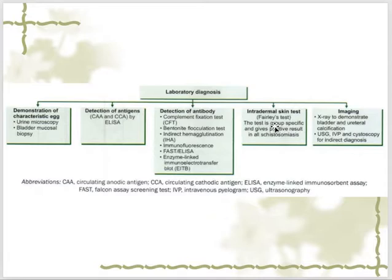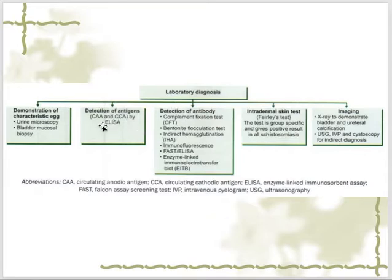Currently available tests include the circumoval precipitin test (COPT), the indirect hemagglutination test (IHA), and ELISA — all to detect antigens or antibodies. Nowadays, more of this ELISA testing is being done to detect active infection. Gut-associated antigens are circulating in the blood, like the circulating anodic antigen (CAA). CAA is particularly useful because it can be detected in urine, so we can take the urine and run the assay to find CAA.